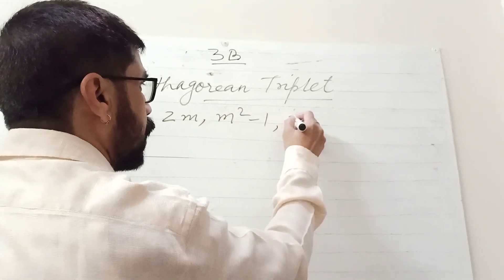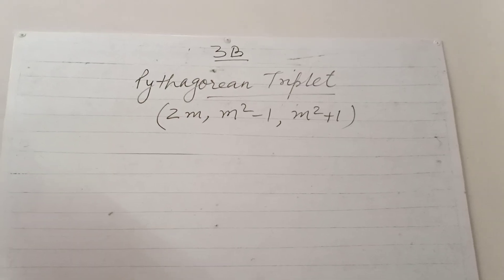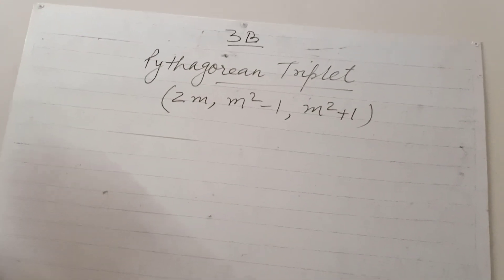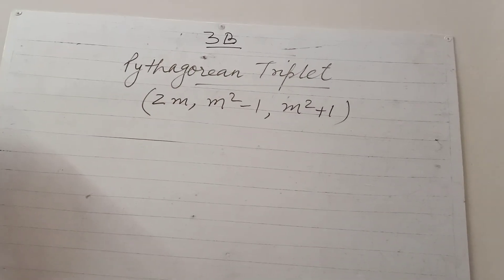m² - 1, m² + 1. This is the form of a Pythagorean triplet. Now, you will get any of the numbers - it may be 2m, m² - 1, or m² + 1. How are we going to identify which number is what?